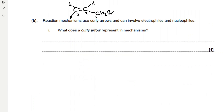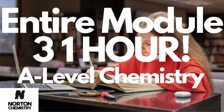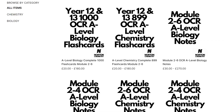A curly arrow in a reaction mechanism represents the movement of an electron pair. Thanks for watching — make sure to check out my entire Module 3 revision in under one hour. You can also check out my website to purchase my notes and flashcards; the link will be in the description below.